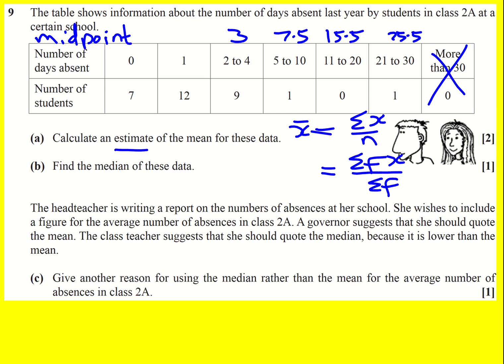So if I want to work out an estimate for the mean, it's going to be approximately the sum of f times x, approximately 7 times 0 plus 12 times 1 plus 9 times 3 plus 1 times 7.5.